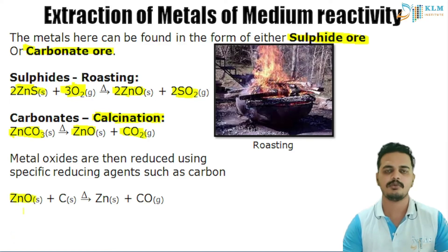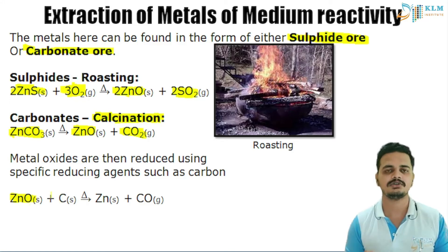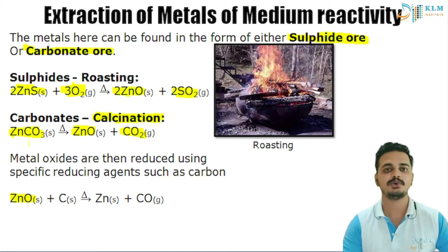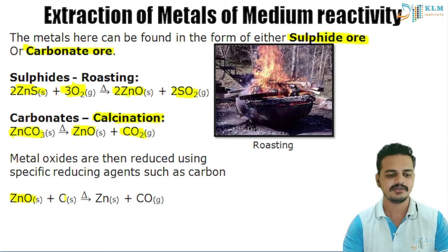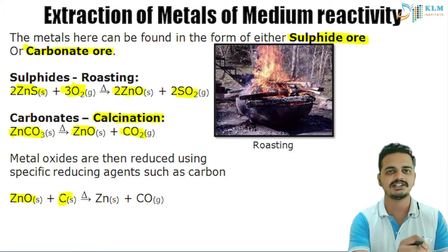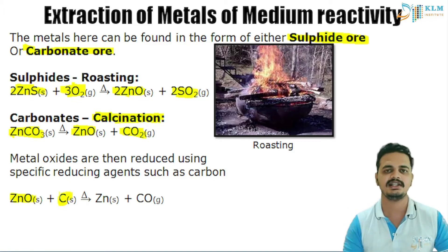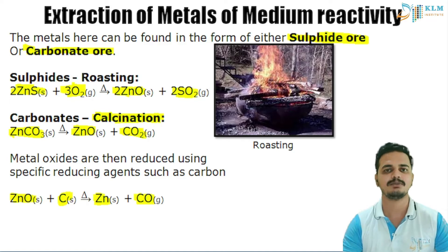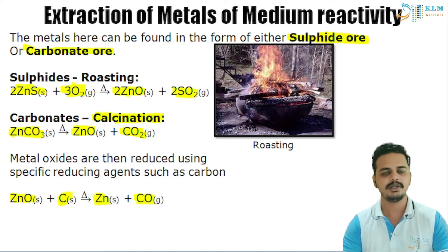Now we need to remove the oxygen from zinc oxide. If a compound loses oxygen, this is called reduction. We add a reducing agent — here we use carbon. Carbon has affinity towards oxygen, so it takes the oxygen and leaves zinc behind. We get our zinc as the product, and carbon takes the oxygen to form carbon monoxide as the byproduct.